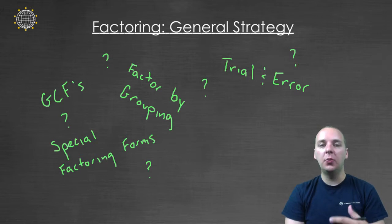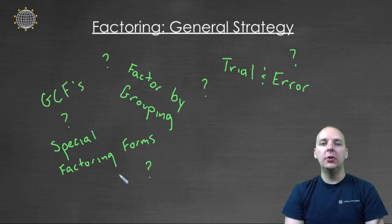We've learned so many techniques over the last few videos. You know, we've learned factor using greatest common factors, factor by grouping, trial and error. There was a whole lot of special factoring forms. So when do you use each of these?